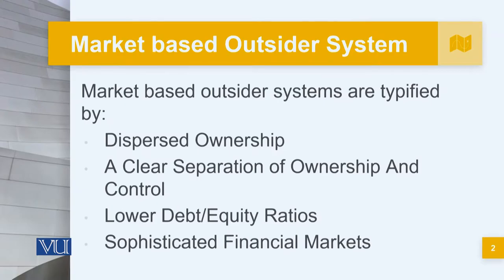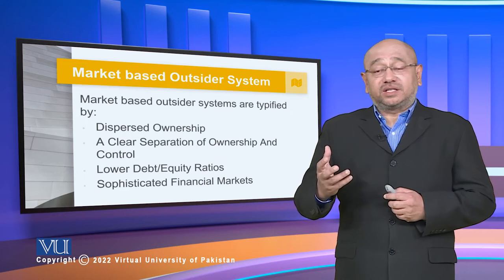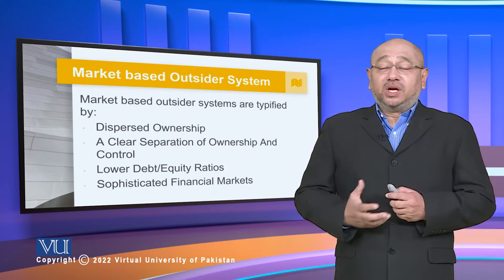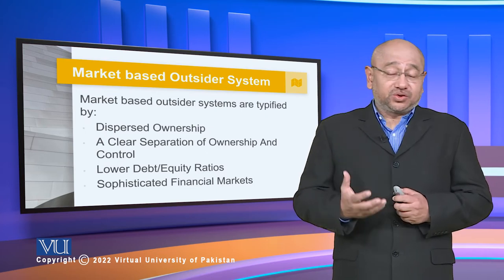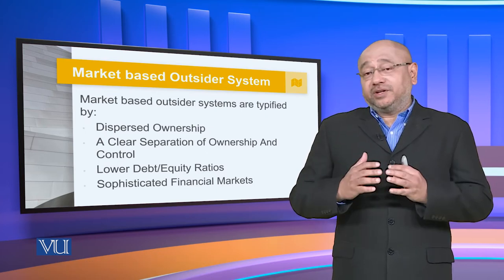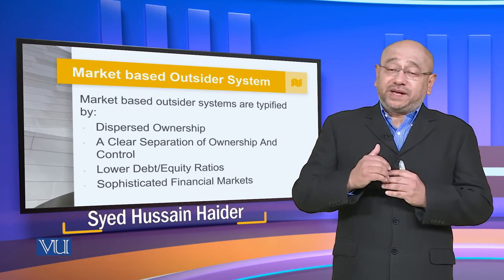When we are looking at these, there is a market-based outsider system which is typified by dispersed ownership, a clear separation of ownership and control, lower debt-equity ratios, and sophisticated financial markets. In more advanced countries, this market-based outsider system tends to exist — we see it in America, Europe, Japan, and Australia. They each have their own texture and contextualization, but broadly speaking, it is market-based.